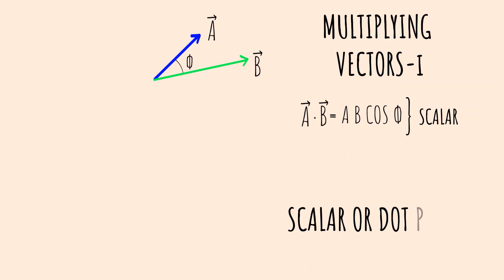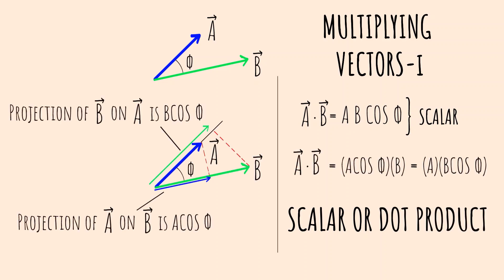Multiplication of vector is a tricky business and there are two ways to do it. The first method involves two vectors making an angle with each other and their product results in a scalar quantity. It is called a dot product or scalar product. It is read as a dot b and involves the projections of vector on each other.